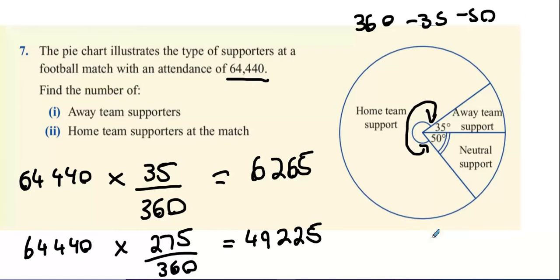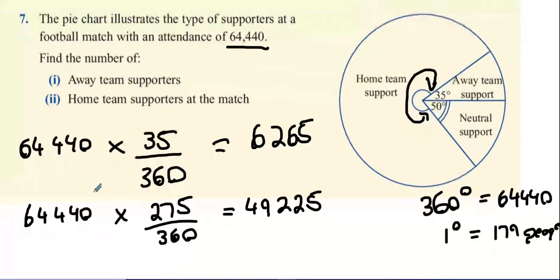Another way of doing it would be to say that 360 degrees is the same as 64,440 people. Divide that by 360 and what do you get? One degree is 179 people. And therefore, 35 degrees is multiplied by 35. You can also do it that way where you know 360 degrees is 64,440. One degree is 179. Multiply 179 by 35 and you will find out what is 6,265. Same way. Same method, actually.